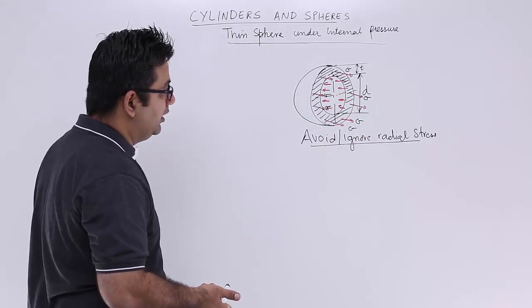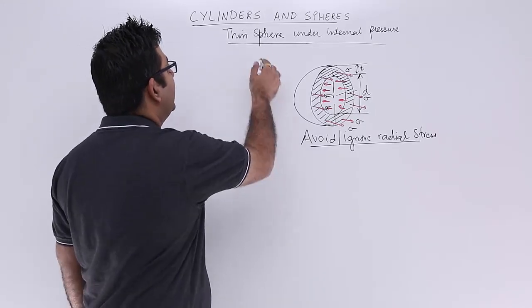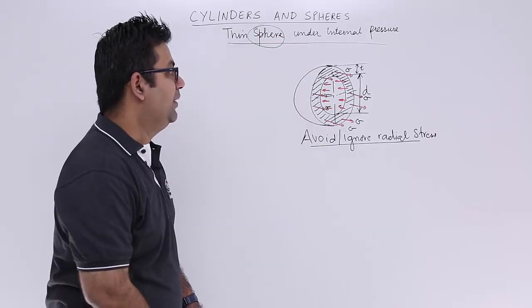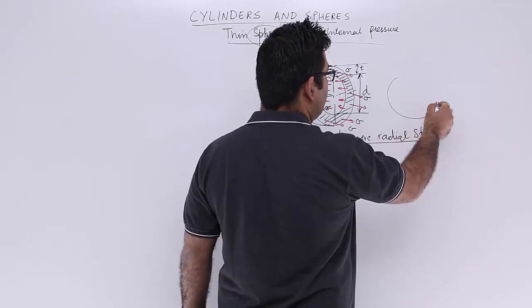It's not actually in the direction of length because there is no length for a sphere, but the radial direction is not there. So radial direction if you look at this,